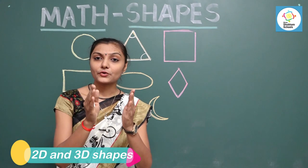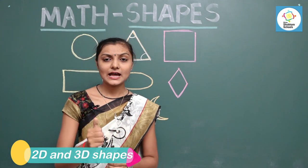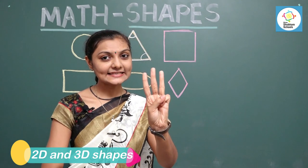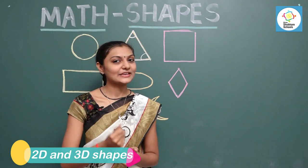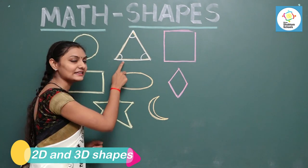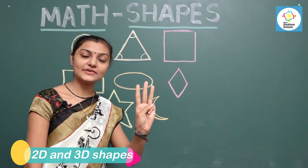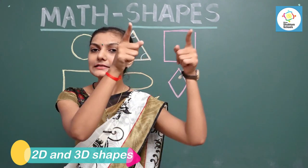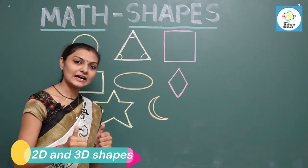Then road signs are also in the shape of a triangle. Now I ask you: suppose I have three sides and three corners — which shape am I? Give the correct answer. Yes, this is a triangle, because a triangle has three sides and three corners. Now take a look around you and make a list of those things you see in the shape of a triangle. Understood?